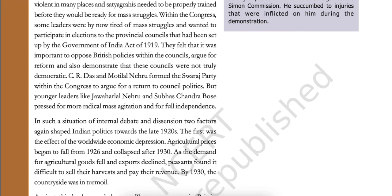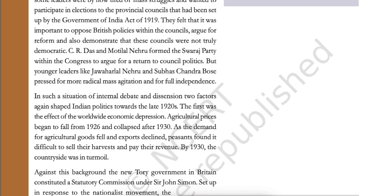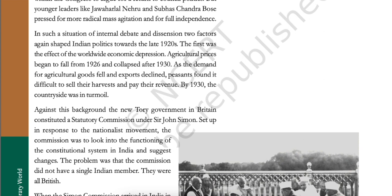Within the Congress, some leaders were by now tired of mass struggles and wanted to participate in elections to the provincial councils set up by the Government of India Act of 1919. They felt it was important to oppose British policies within the councils, argue for reform, and demonstrate that these councils were not truly democratic. Chitta Ranjan Das and Motilal Nehru formed the Swaraj Party within the Congress to argue for the return to council politics, but younger leaders like Jawaharlal Nehru and Subhash Chandra Bose pressed for more radical mass agitation and full independence.